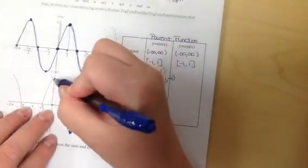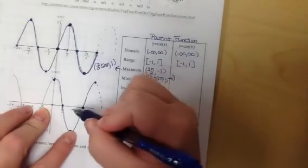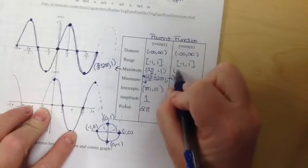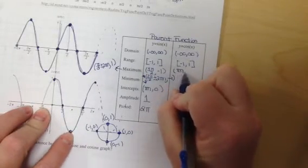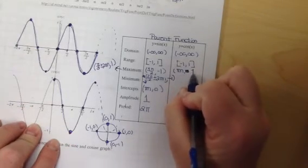My maximums occur at zero, and then they happen at π. So my maximums occur at πn, comma, one.